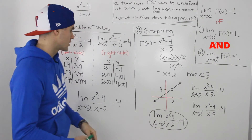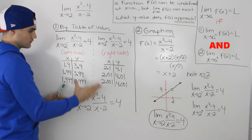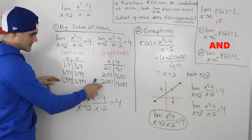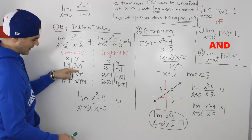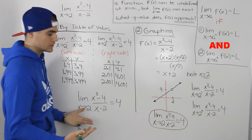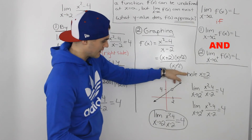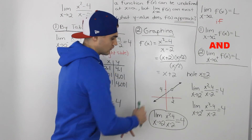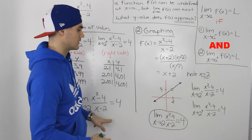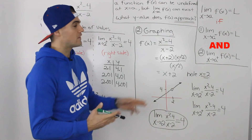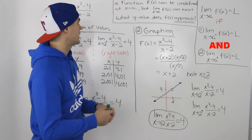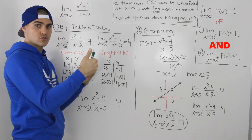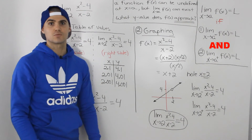So the key word is 'approach.' Notice that at an x value of 2, the function is undefined, but as we move closer to that x value from the left side and the right side, we can tell that the y values are approaching 4. Looking at the graph, when we move from the left side and the right side toward x equals 2, the y values are approaching 4. That's why the limit exists — it's all about what y value f(x) approaches; it can be undefined at a certain point, but if the y values are approaching a certain value, that's what the limit will be.